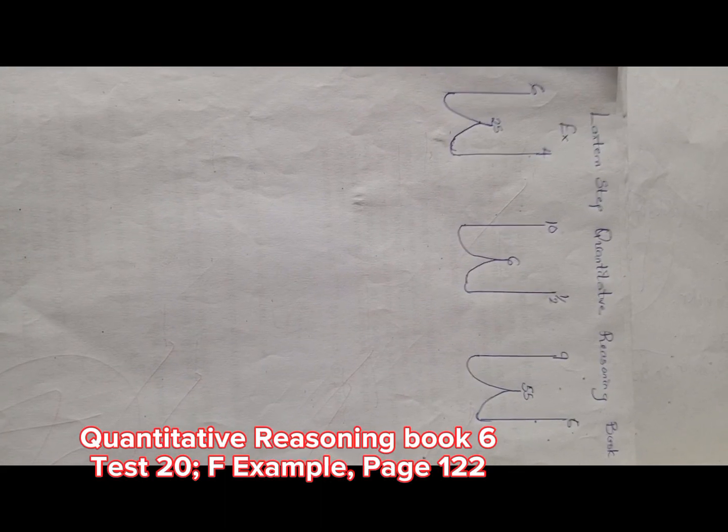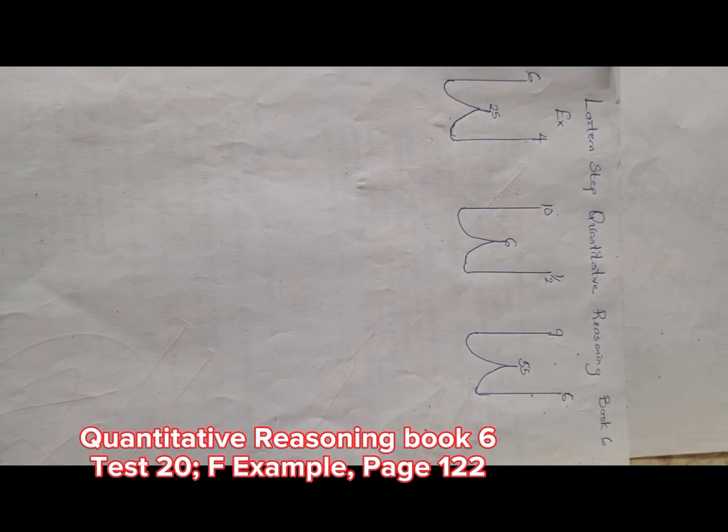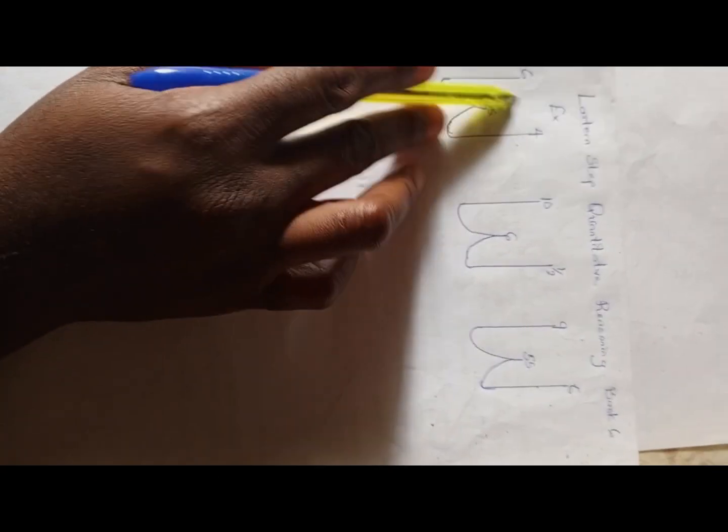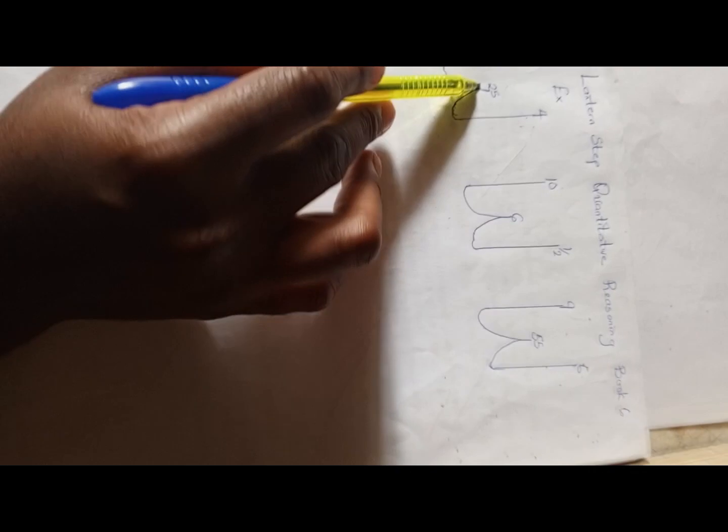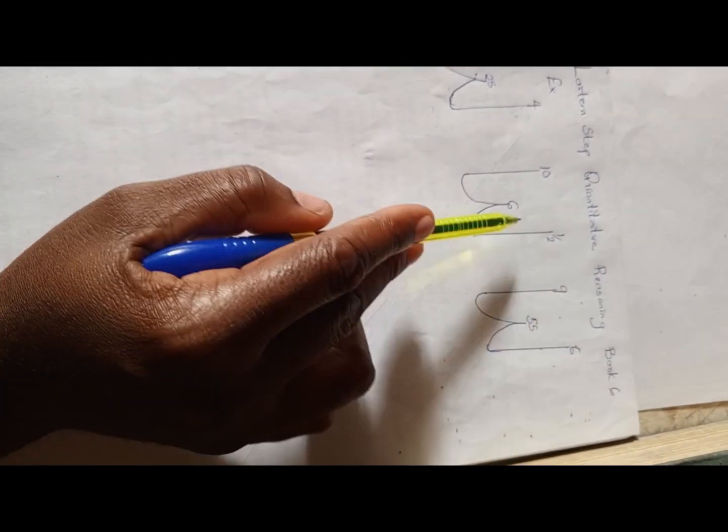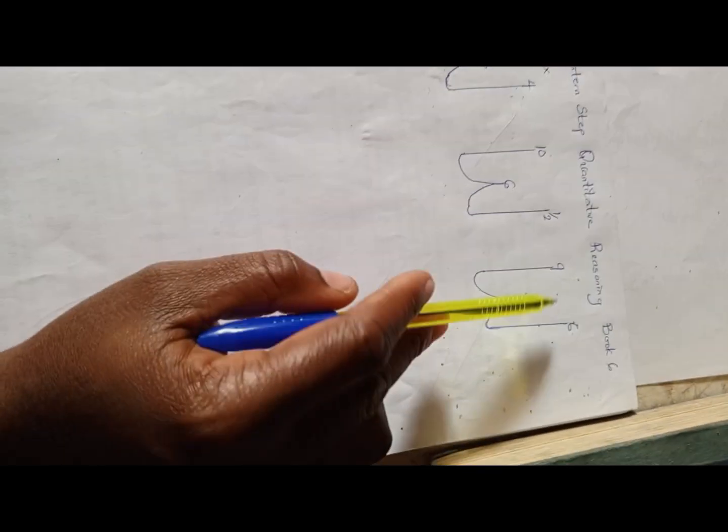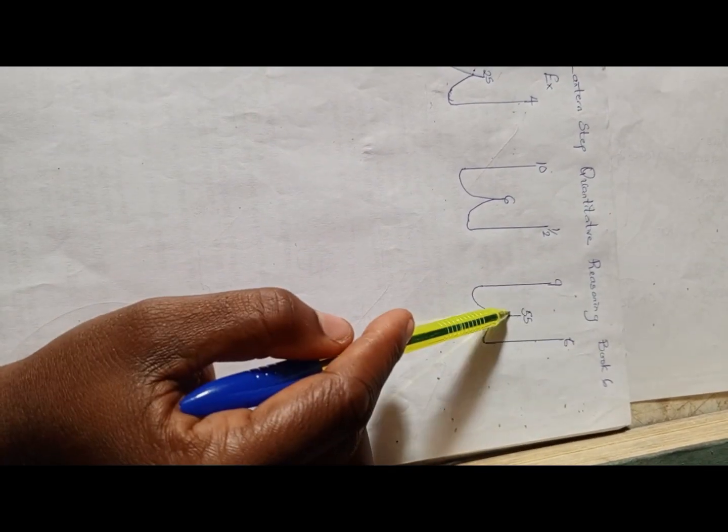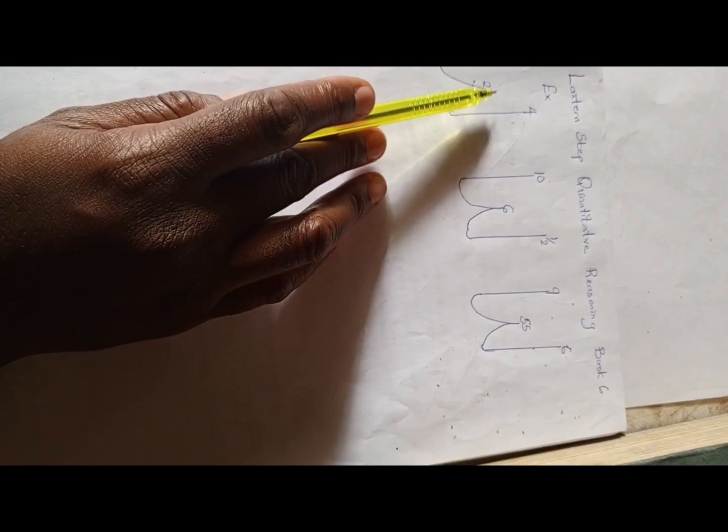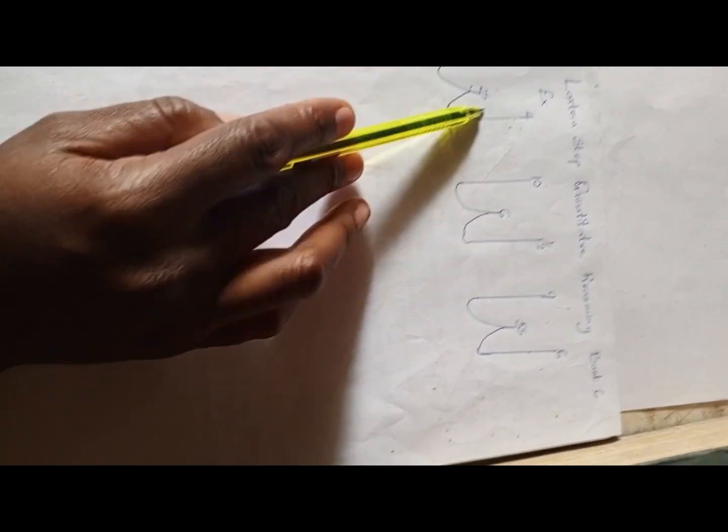Alright, today we're going to be looking at this quantitative exercise for Book 6. We have Example 1: 6, 4, 25. We have Example 2: 10, 1/2, and 6. And here we have 9, 6, and 55. Whatever method works for this will also work for the other examples.